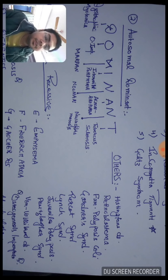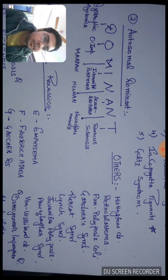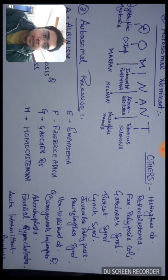Other autosomal dominant diseases are: Huntington disease, retinoblastoma, familial polyposis coli, Gardner syndrome, Turcot syndrome, Lynch syndrome, juvenile polyposis, Peutz-Jeghers syndrome, von Hippel-Lindau disease, and osteogenesis imperfecta is the important one with recently asked questions.